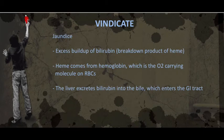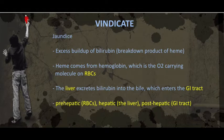Jaundice is due to excess bilirubin in the blood. Bilirubin gets released from red blood cells when they die, which occurs about every 120 days. Specifically, bilirubin is part of the heme components of hemoglobin. The liver is the organ responsible for excreting bilirubin, which goes into the bile and then into the GI tract. So it's useful to divide the causes of jaundice into: 1) pre-hepatic, 2) hepatic, and 3) post-hepatic.